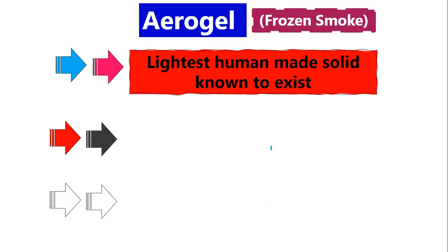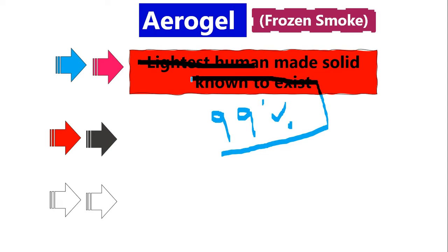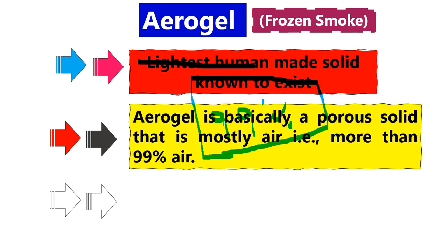If you look into aerogel, you will be amazed — this is the lightest human-made solid known to exist. Aerogel is a solid material that is 99% made from air. When we remove all the liquids from the pores of a gel and fill them with air, almost 99% of the volume is occupied by those pores. That is why it is the lightest human-made solid known to exist. It is a porous solid — not air — but there are so many pores that it is mostly air.